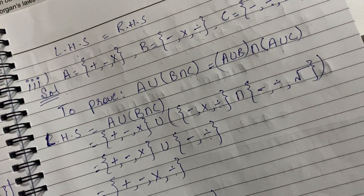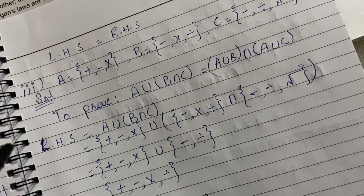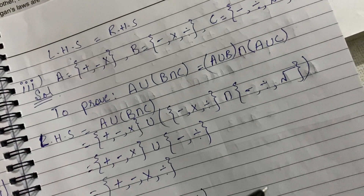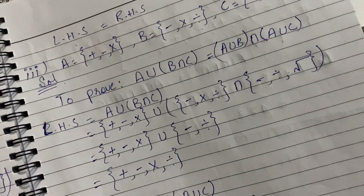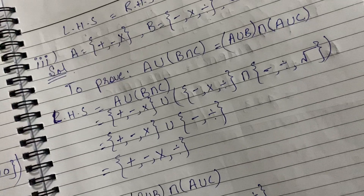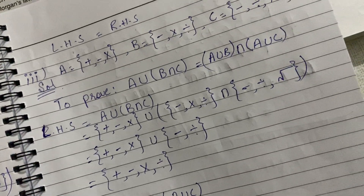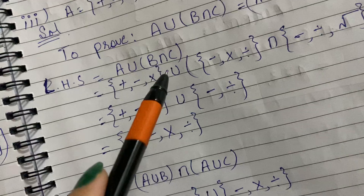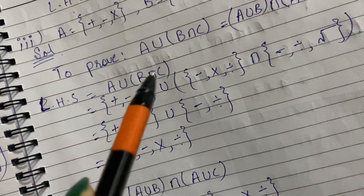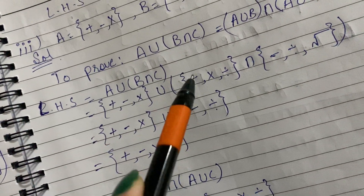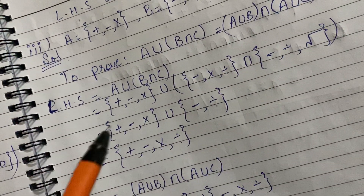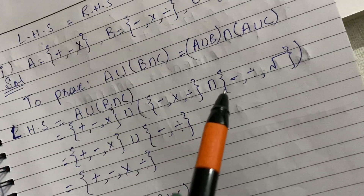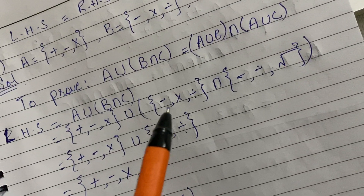Students, we have the third part. Left hand side is A union B intersection C. Set A is {+, -, ×}. You will write B set and then C set. Now you will find the intersection of these two sets. What are the common symbols?